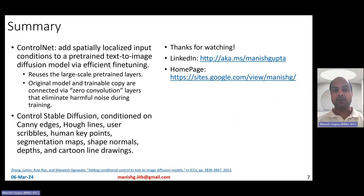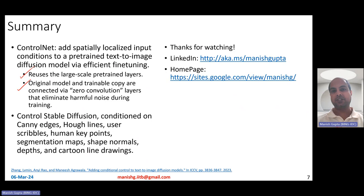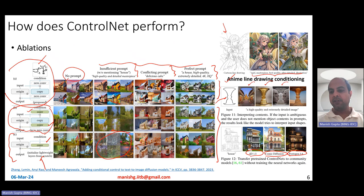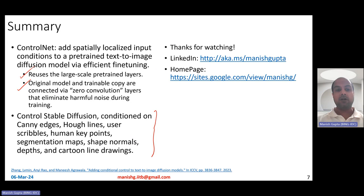In summary, ControlNet is about adding specially localized input conditions to a pre-trained text-to-image diffusion model via efficient fine-tuning. It does not forget what it learned in the pre-training stage. It uses large-scale pre-trained layers, and the original model and trainable copy are connected with zero convolutions to eliminate any harmful noise during training. Using ControlNet, you can control any kinds of diffusion models — including stable diffusion, Protogen, comic diffusion, and so on — by conditioning them on Canny edges, Hough lines, user sketches or scribbles, human keypoints, segmentation maps, shape normals, depths, or cartoon line drawings.